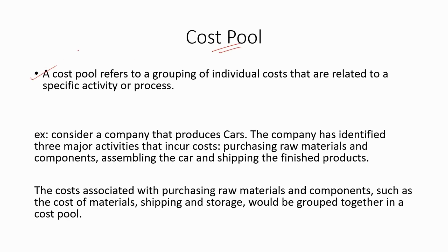Cost pool: a cost pool refers to a grouping of individual costs that are related to a specific activity or process. For example, consider a company that produces cars. The company has identified three major activities: purchasing raw materials and components, assembling the car, and shipping the finished products. The costs associated with purchasing raw materials and components — such as the cost of materials, shipping, and storage — would be grouped together in a cost pool. Simply, a cost pool is a combination of individual costs specific to an activity or process.